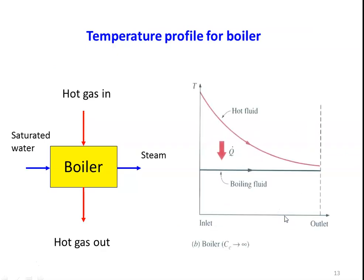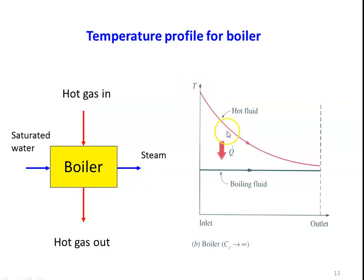This is the temperature profile of a boiler or evaporator. In the evaporator, saturated water enters, is heated up, and steam leaves on the other side. For the conversion of water into steam, the fluid temperature remains constant during the phase change process — the boiling fluid temperature is constant. The hot gases enter with higher temperature and decrease in temperature, transferring that heat to water which is converted into steam. The heat given to the fluid increases the latent heat of evaporation.